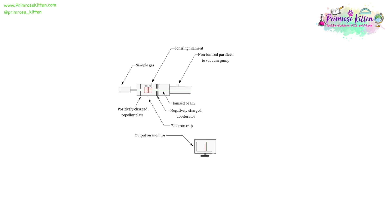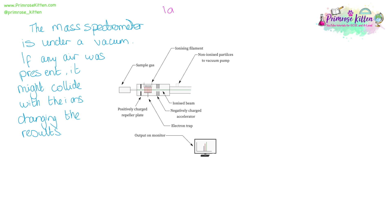Here we have a diagram representing our time of flight mass spec. This is under a vacuum. If there was any air present, and remember air is a mixture of lots of different things, it might collide with the ions and affect the results.